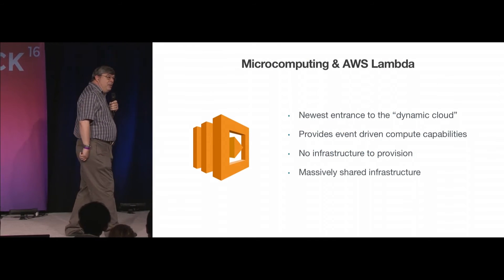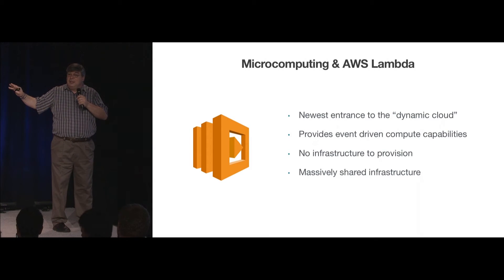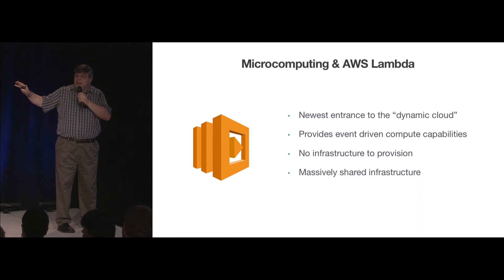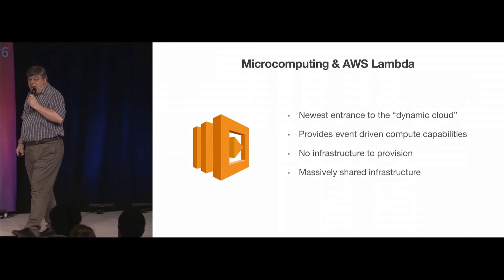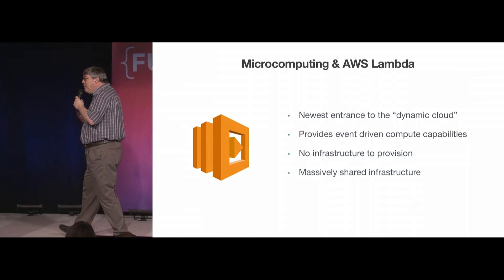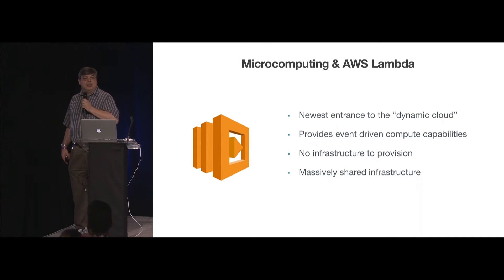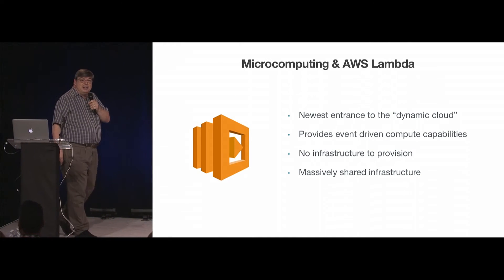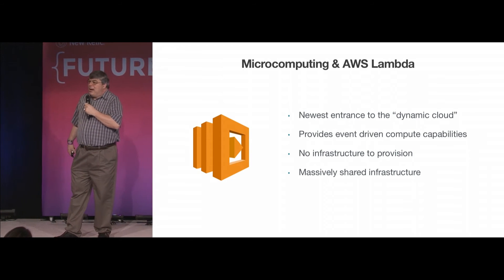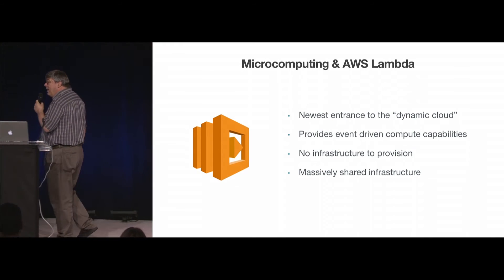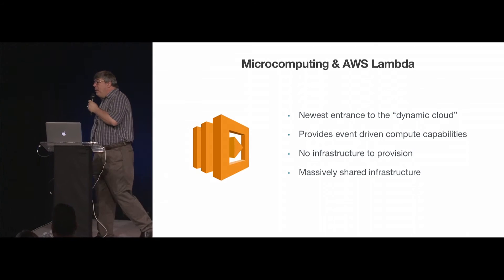Let's talk a little bit about Lambda. How many people are familiar with Lambda? How many have used it? How many use it in production? That number is higher than it was six months ago, and it'll be higher six months from now. What is Lambda? It's the newest entrant in what I call the dynamic cloud — it provides essentially event-driven compute capabilities. When Lambda was first announced, AWS described it as Excel functions: the infrastructure in AWS was like cells in a spreadsheet, and as those cells changed, functions execute. It provides an event-driven, change-driven compute capability for AWS infrastructure.